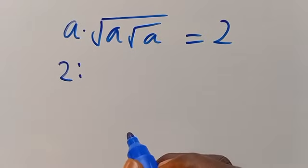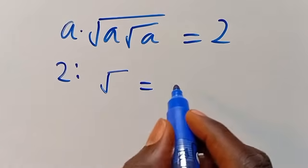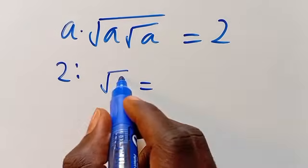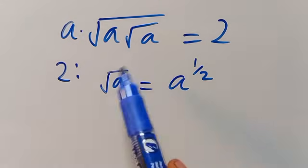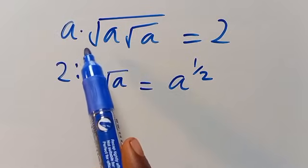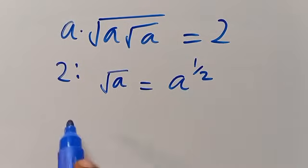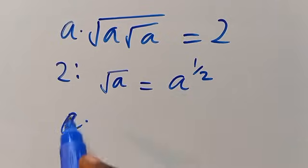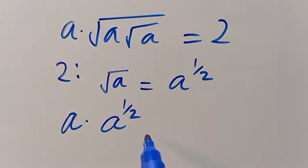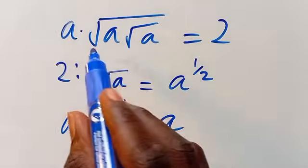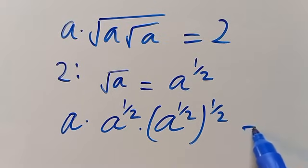From here, we note that root A equals A to the power of 1 divided by 2. This particular A has one root; this next root A has two roots — roots 1 and 2. So we are going to have A multiplied by this A to the power of 1 divided by 2, multiplied by another A to the power of 1 divided by 2, again to the power of 1 divided by 2, which equals 2.